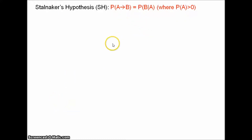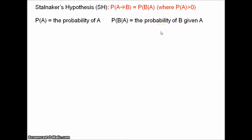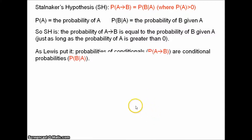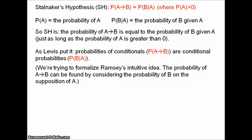What does this mean? We read P(A) as the probability of A, and we read P(B|A) as the probability of B given A. So Stalnaker's Hypothesis is: the probability of 'if A then B' is equal to the probability of B given A, just as long as the probability of A is greater than 0. I'll explain this last part a bit later. But what matters now is: the probability of 'if A then B' equals the probability of B given A. As Lewis put it quite succinctly, probabilities of conditionals are conditional probabilities.